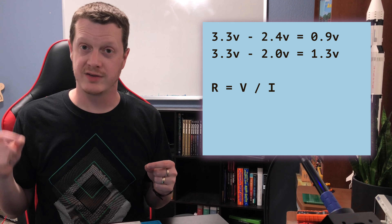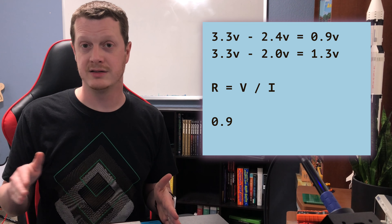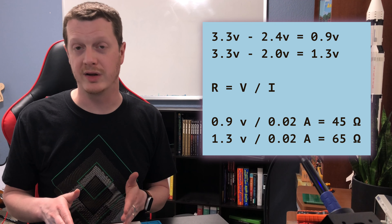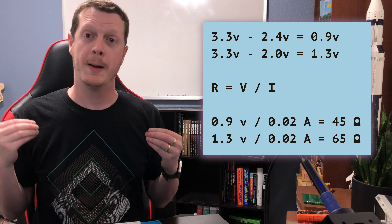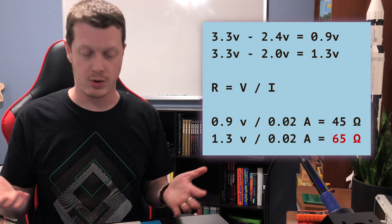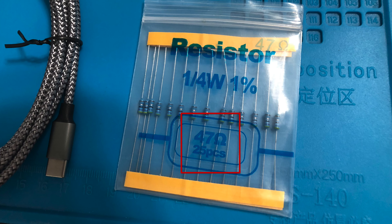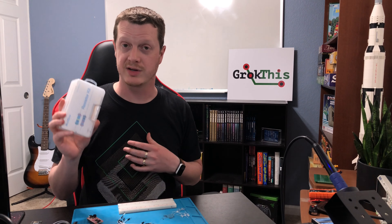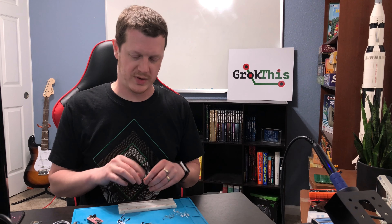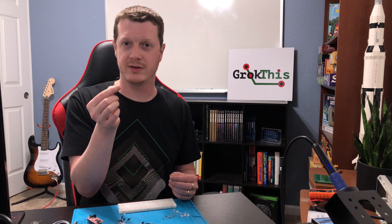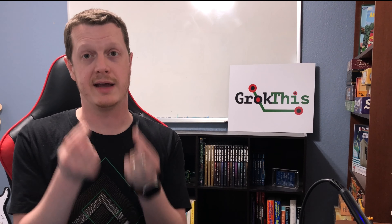We're going to need to take a voltage drop of 0.9 to 1.3 volts. We can plug that into Ohm's law and rearrange it to get the resistor we need. R equals voltage divided by current. In our case, 0.9 divided by 20 milliamps to 1.3 divided by 20 milliamps gives us a value of between 45 and 65 ohms. These resistors I have here are 47 ohm resistors, which are right in that range — a very typical value available in lots of resistor kits.